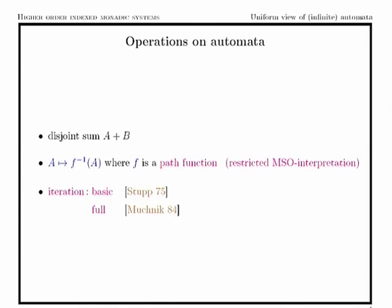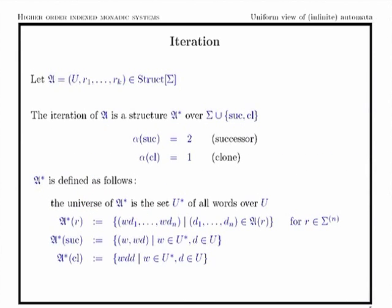The other operation we need is iteration, which has two forms: basic iteration and full iteration. The basic iteration was defined by Stupp in 1975. The full iteration, which works for any kind of relational structure, was introduced by Mucznik as an extension of this basic iteration. I don't want to explain all the details of the definition — we will look at an example.